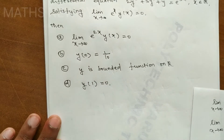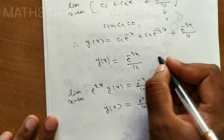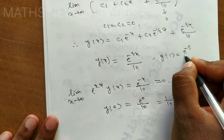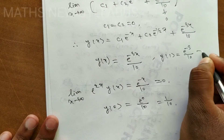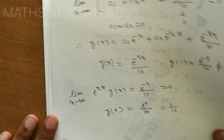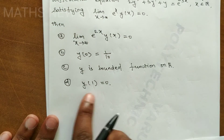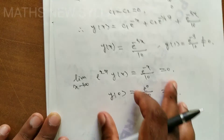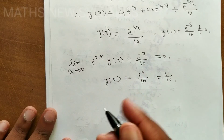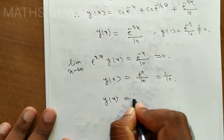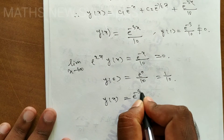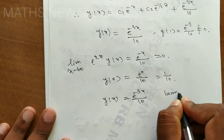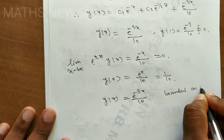Checking option (d): y(1) = e^(-3)/10, which is not equal to 0, so option (d) is incorrect. Checking option (c): y(x) = e^(-3x)/10. As x → -∞, e^(-3x) → ∞, so y is not bounded on R. Option (c) is incorrect.